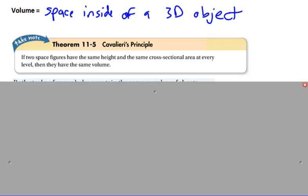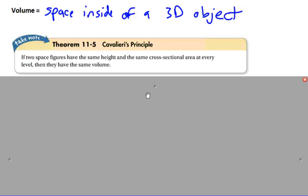I'm going to start you off with this unique theorem, Theorem 11.5. If two space figures have the same height and the same cross-sectional area, if you cut it straight across horizontally for a cross-section, if it's the same area in both of those figures at every level, then they have the same volume.